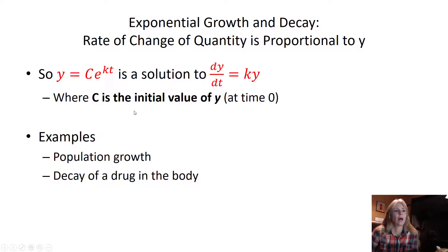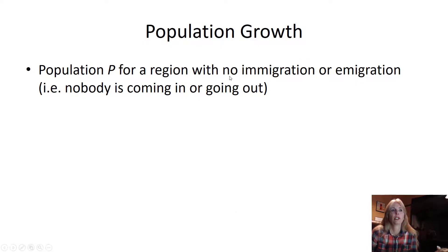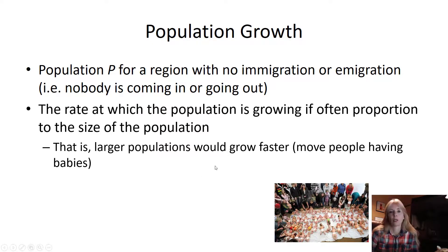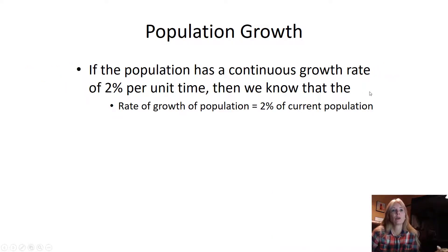Once again, c is the initial time. A lot of examples, you will see these being used as population growth and decay of drug in the body. So it says population p for a region with no immigration or emigration. Nobody's getting in, nobody's coming out. The rate at which the population is growing is often proportioned to the size of the population. In other words, larger populations would grow faster. If the population has a continuous growth rate of two percent per unit of time, then we know the rate of growth. So the change in population over change in time is two percent of the current population.